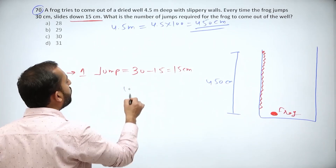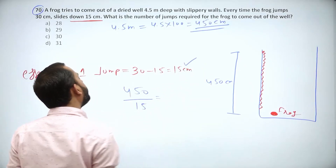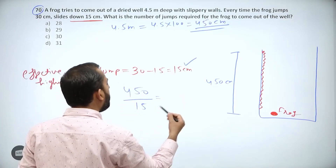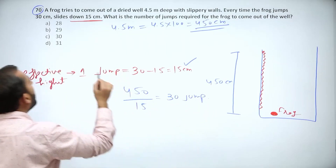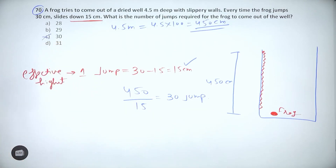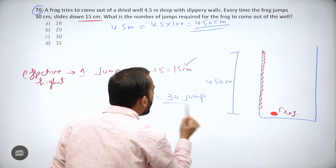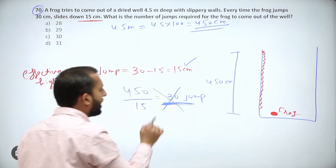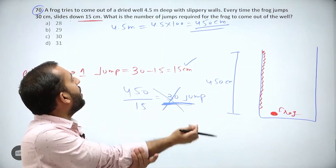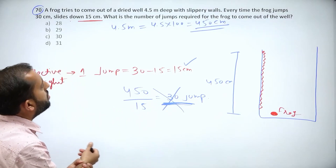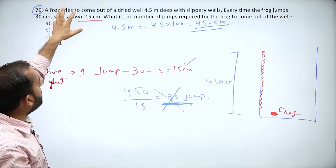What most people do is take the total height of 450 divided by 15, getting 30 jumps, and mark that answer directly. But this is wrong. Whenever increment and decrement are both happening - like a frog jumping up and sliding back down - that simple division is not correct.